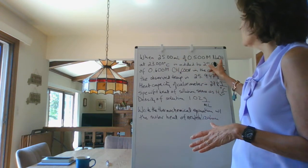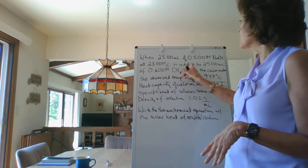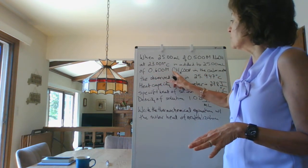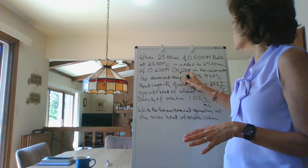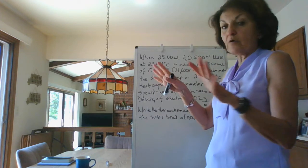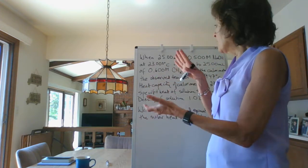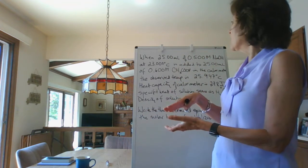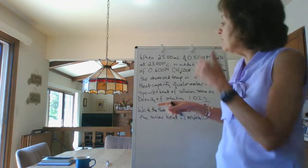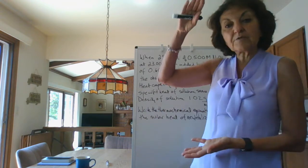It says here when 25 mils of a 0.5 molar sodium hydroxide solution at 23 degrees Celsius is added to 25 mils of a 0.600 molar acetic acid solution in the calorimeter, we're going to assume that they're both at the same temperature. The acetic acid, the calorimeter (which is the coffee cup), and the sodium hydroxide are all at 23 degrees. Then you mix them together and the temperature is going to go up because this is an exothermic acid-base neutralization.